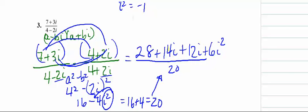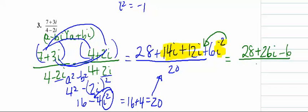Now let's look at the numerator. We have like terms in the middle, and then the i squared is negative 1. So if we simplify the top, we get 28 plus 14 plus 12 is 26i, and then this i squared changes the end from a plus 6 to a minus 6. Now we can do 28 take away 6. 28 minus 6 is 22 plus 26i over 20.